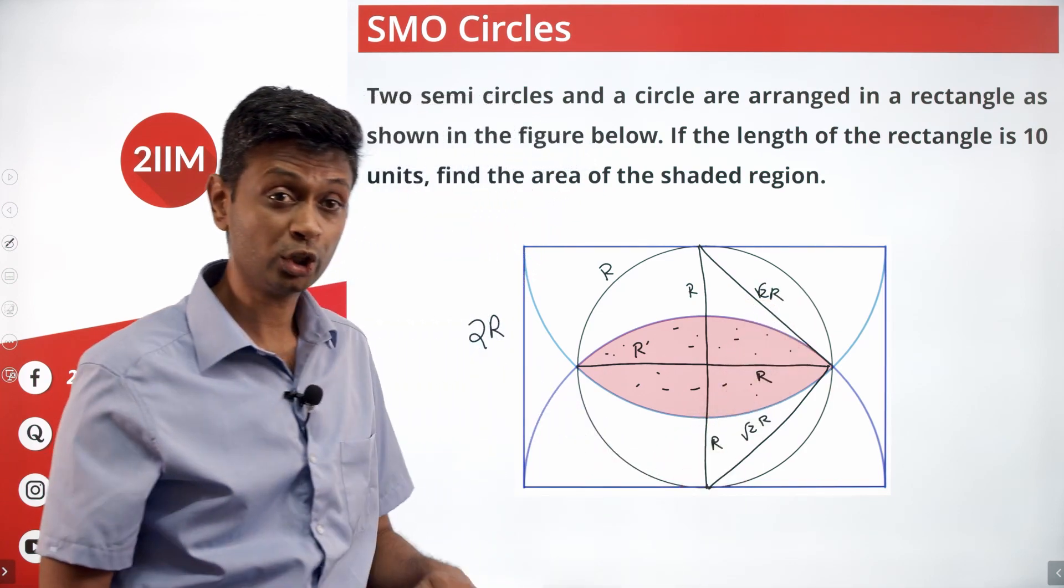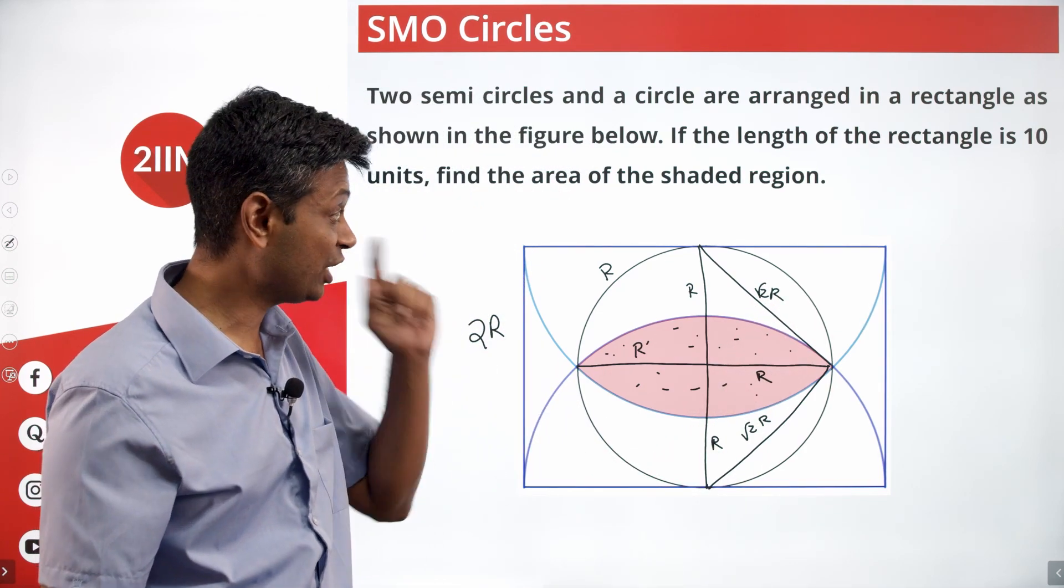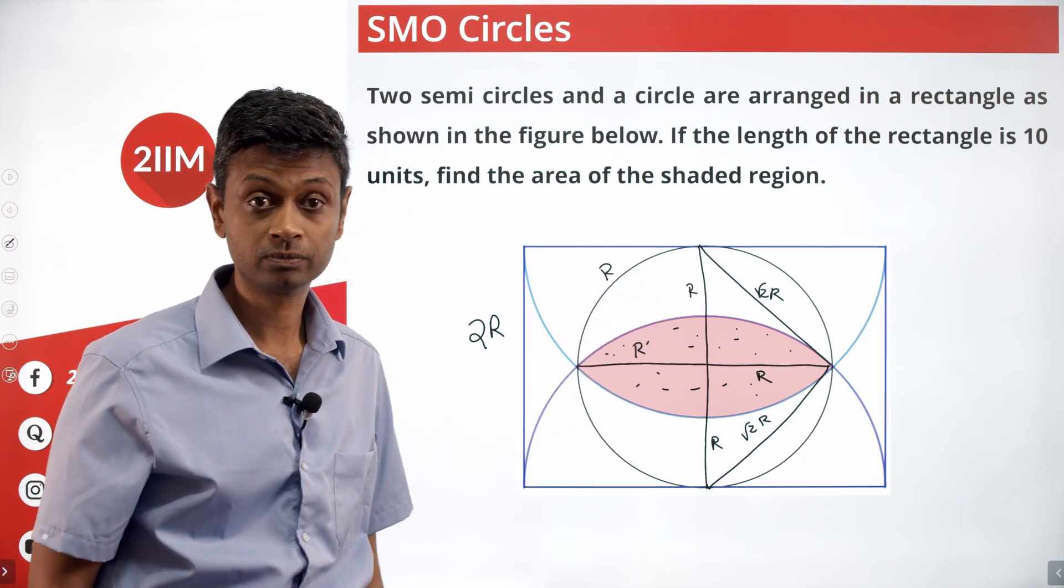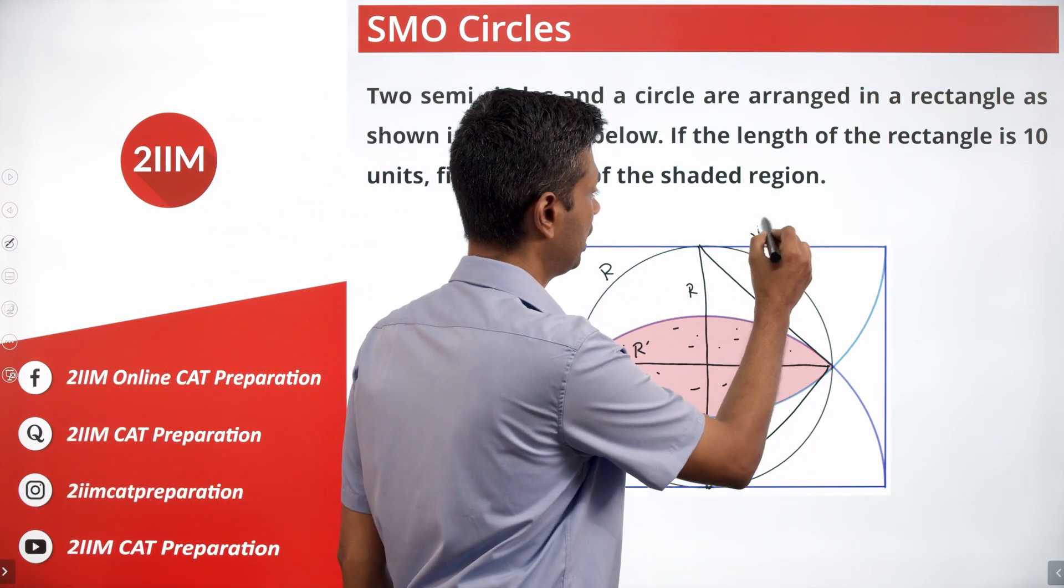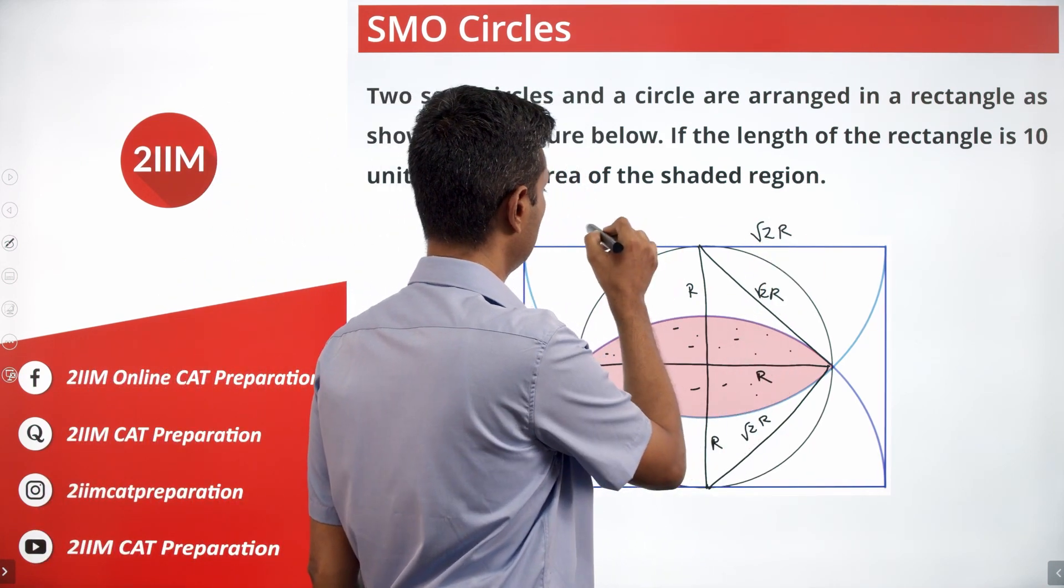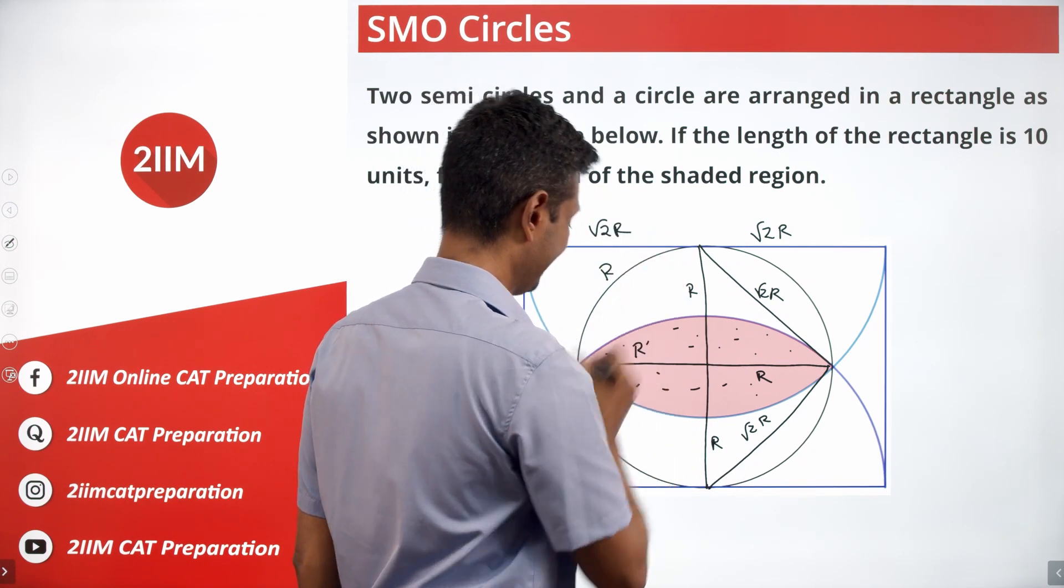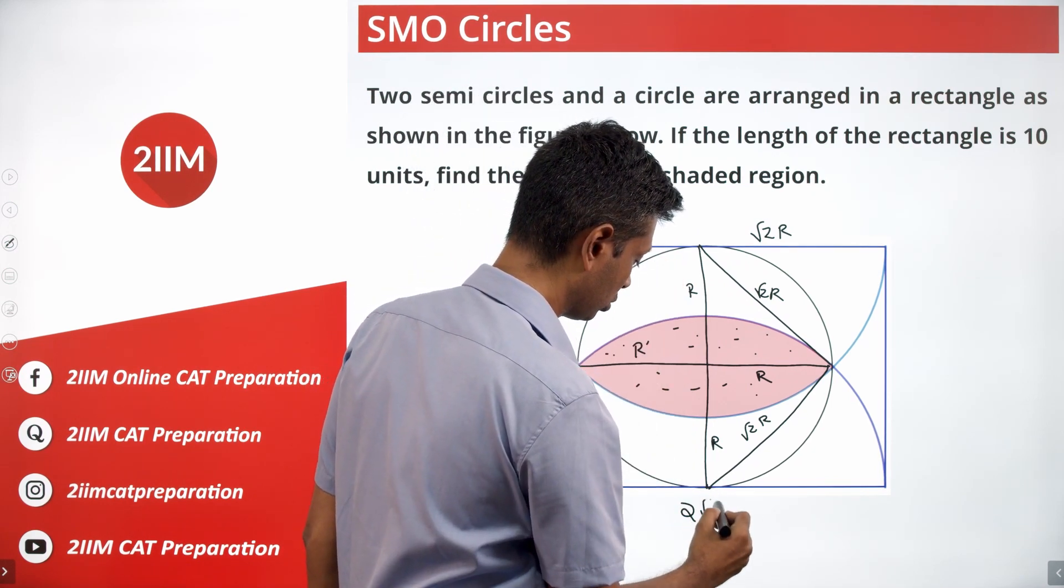Think about it from the point of view of the semicircle. The radius of the semicircle is root 2R. This part is root 2R, this part is root 2R. The entire length is 2 root 2R.